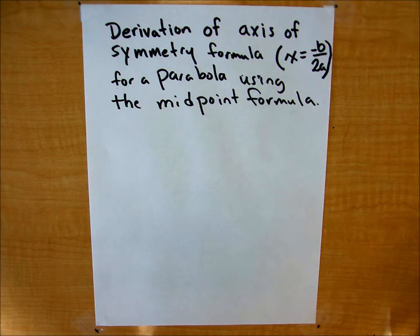Today I'd like to go over a quick derivation of the axis of symmetry formula for a parabola, which is x equals negative b over 2a.